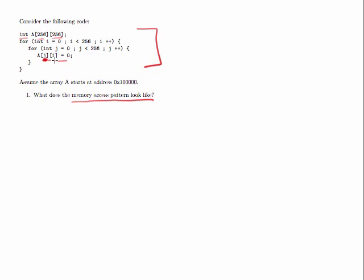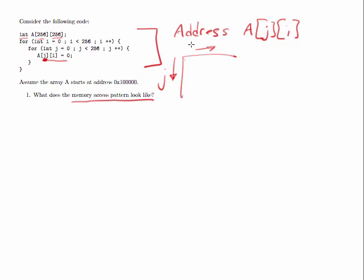That is the first of the two array indexes. So I'm going to write an equation for the address which is accessed when we access a of j, i. Recall from lecture that j is in the row dimension and i is in the column dimension. So our cache blocks in memory are laid out in this direction, where the j dimension is going to hop from one end of one row to the next. The width of this memory structure is 256 elements.